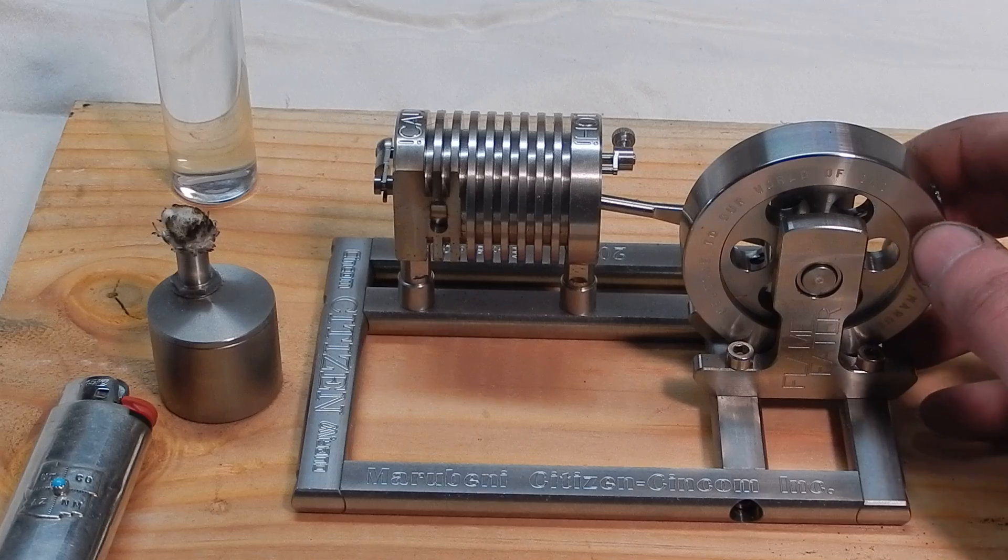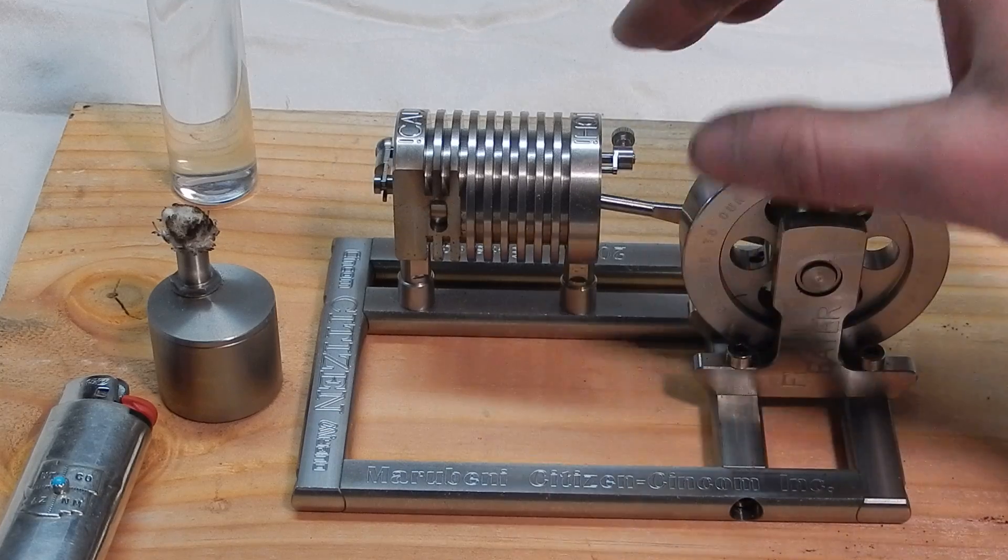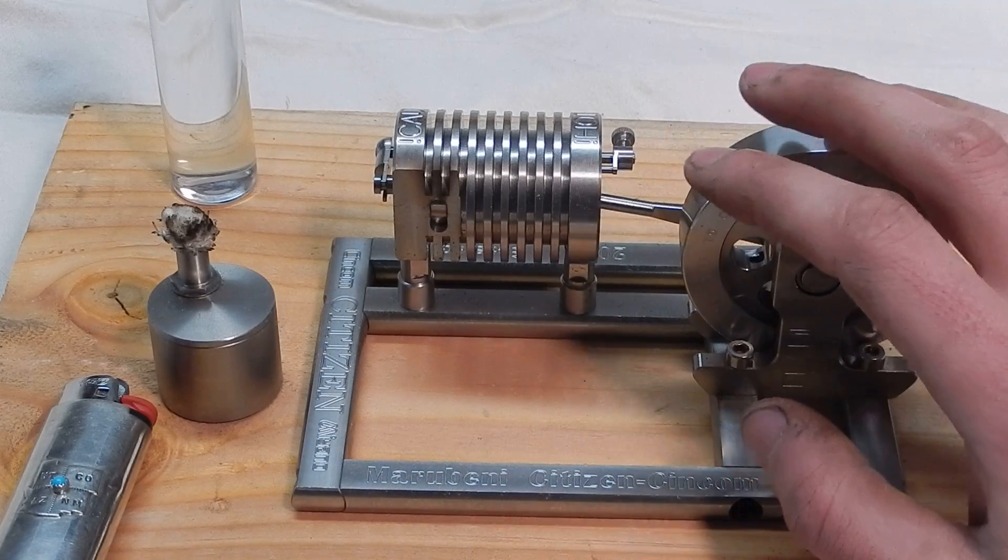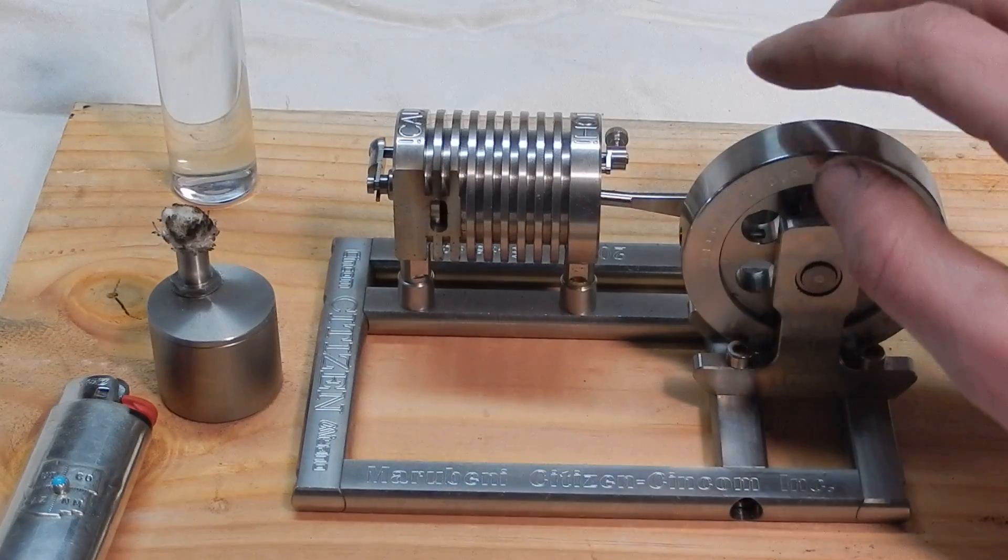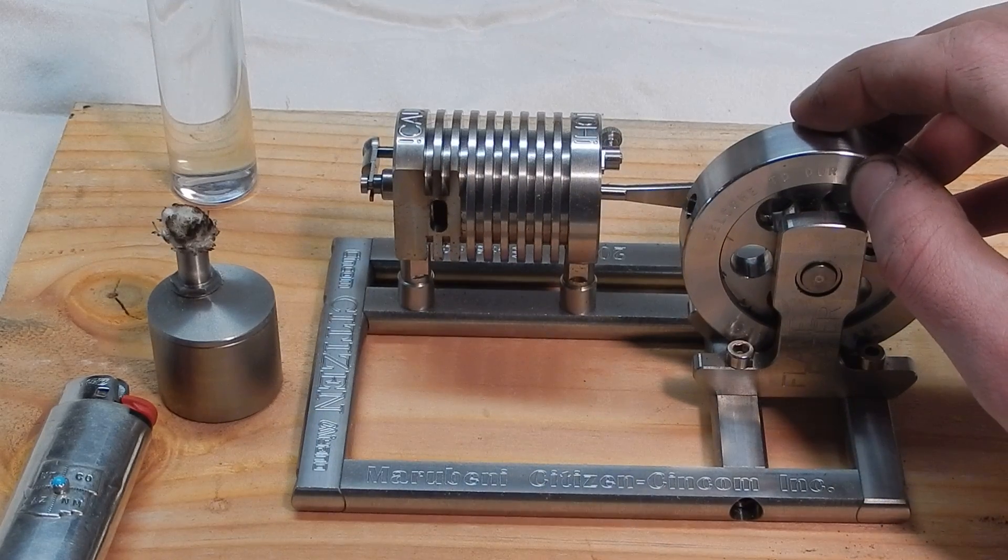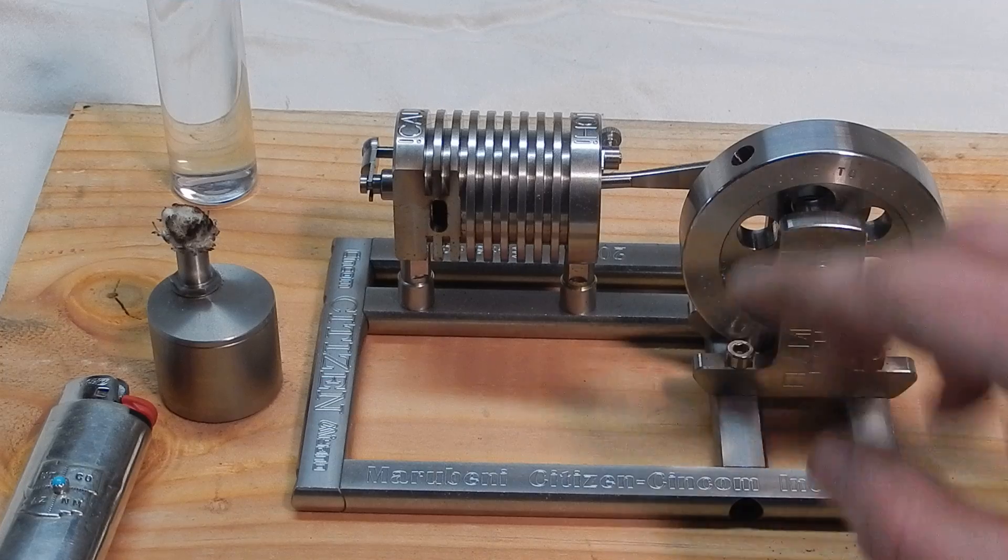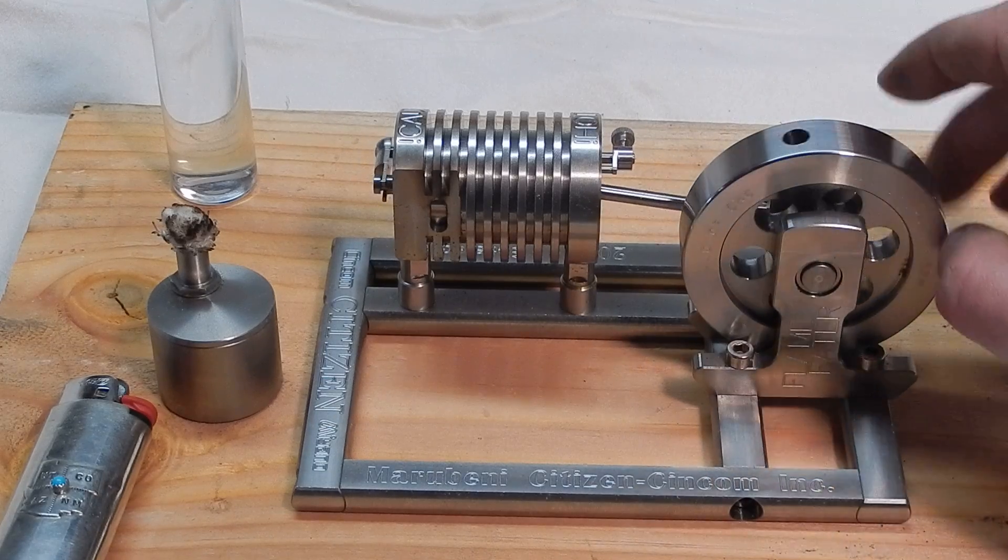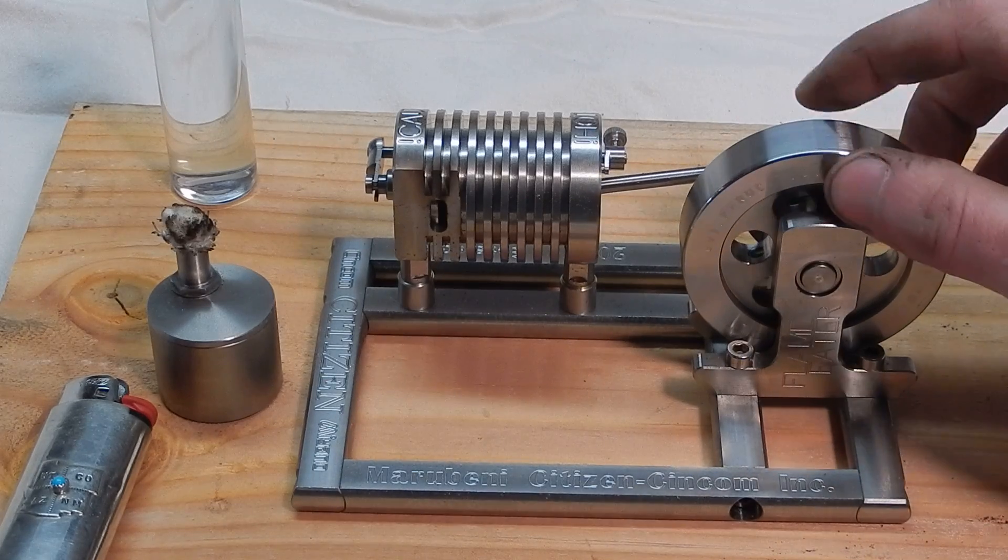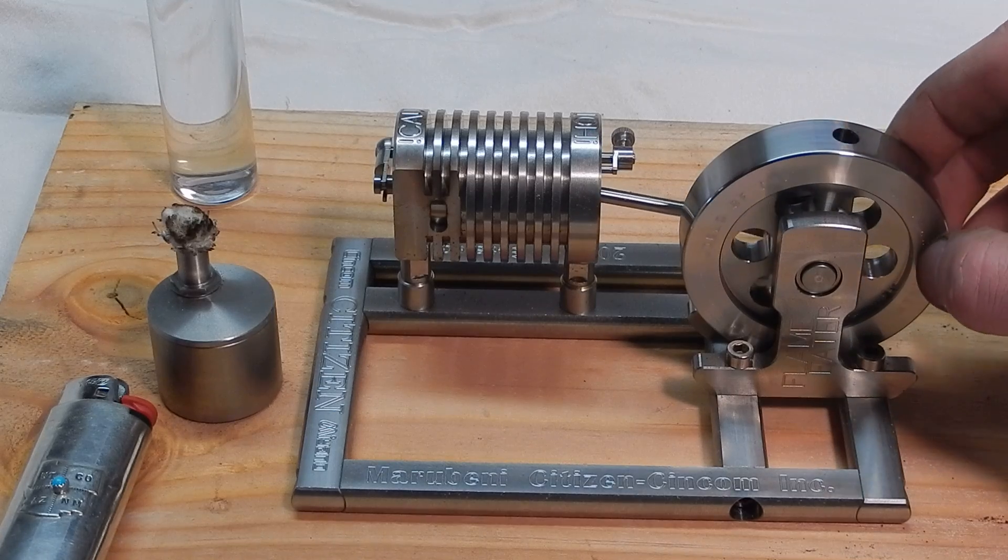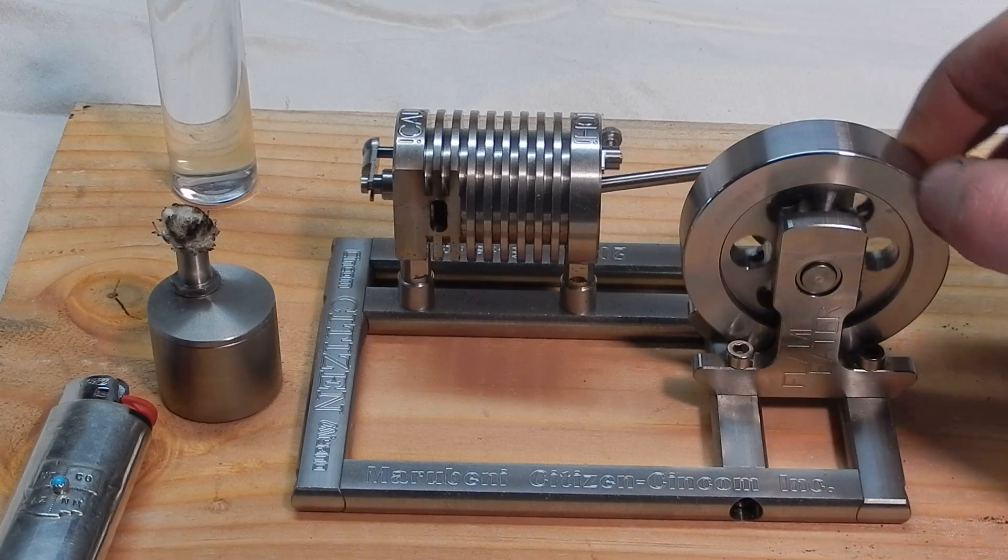And then once the gas has cooled off to whatever temperature it normalizes to in that period of time, the piston will hit the valve in the head and open the valve again. Now it's at top dead center, and with the weight of the flywheel and the inertia of it spinning around, it continues that cycle. So I guess you could say it's a two-stroke. On the downstroke it sucks in hot gas, closes the valve, the hot gas cools and shrinks, pulls the piston back up, valve opens, the cycle repeats.